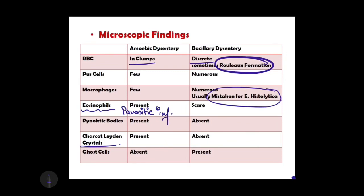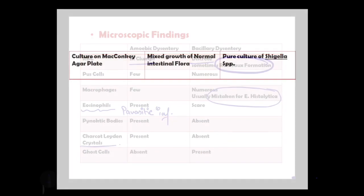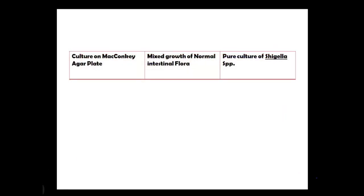Ghost cells are swollen or enlarged epithelial cells with only a cytoplasmic outline but no nucleus. They are present in bacillary dysentery and absent in amoebic dysentery. On culture using MacConkey agar, in amoebic dysentery you find mixed growth of intestinal normal flora, whereas in bacillary dysentery pure Shigella species can be obtained.